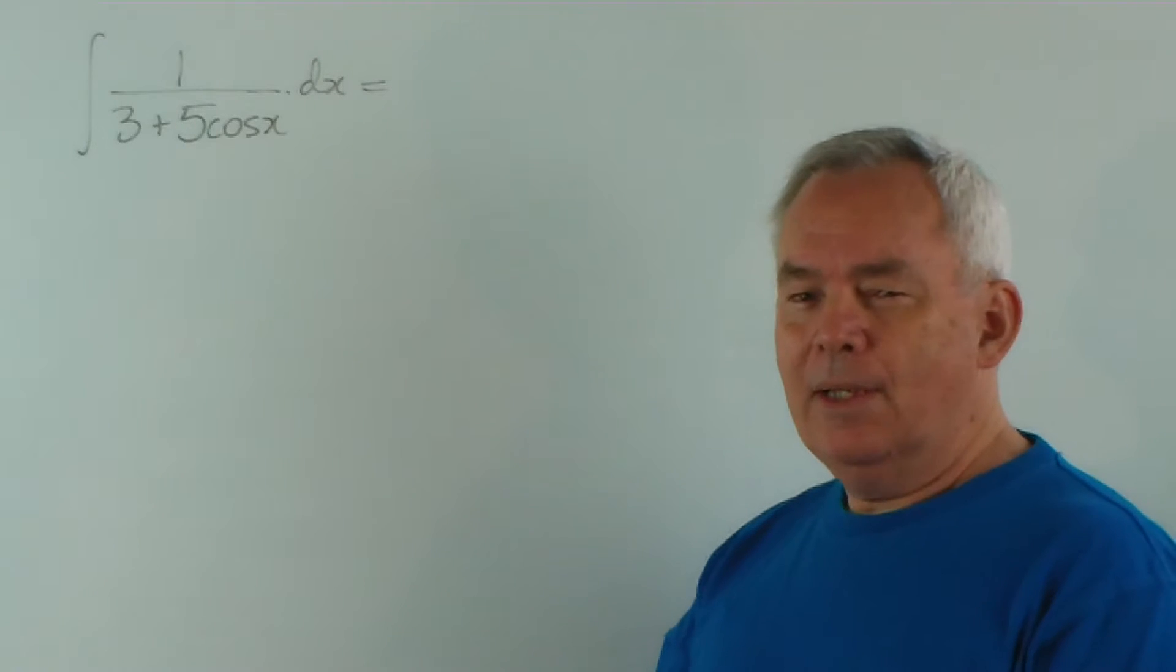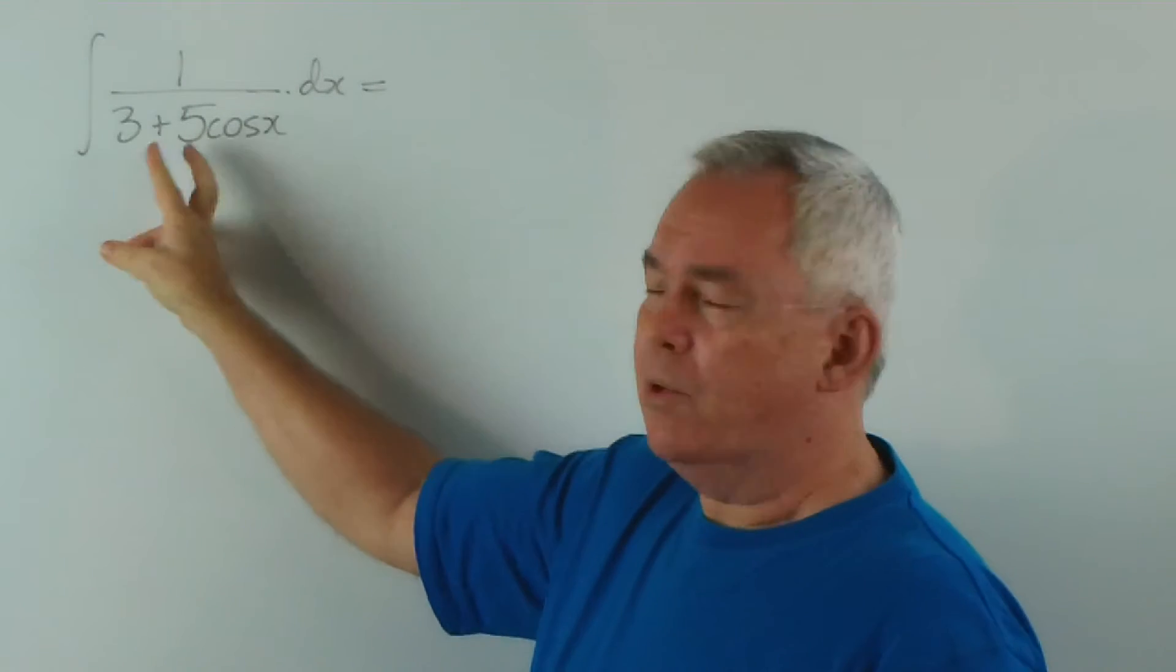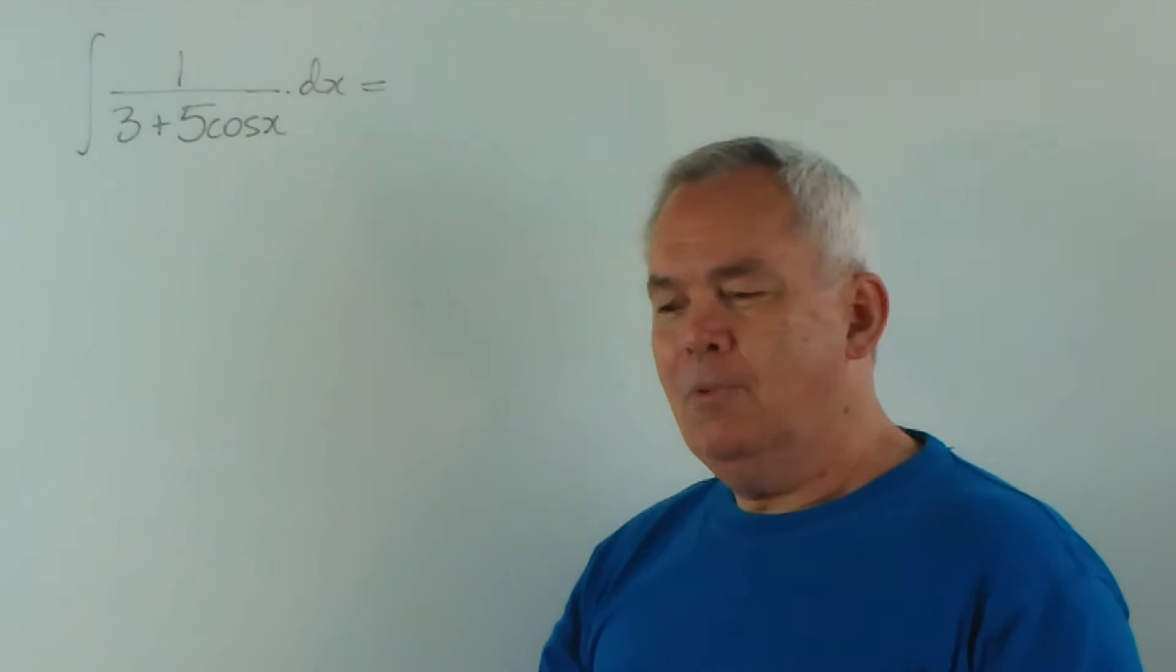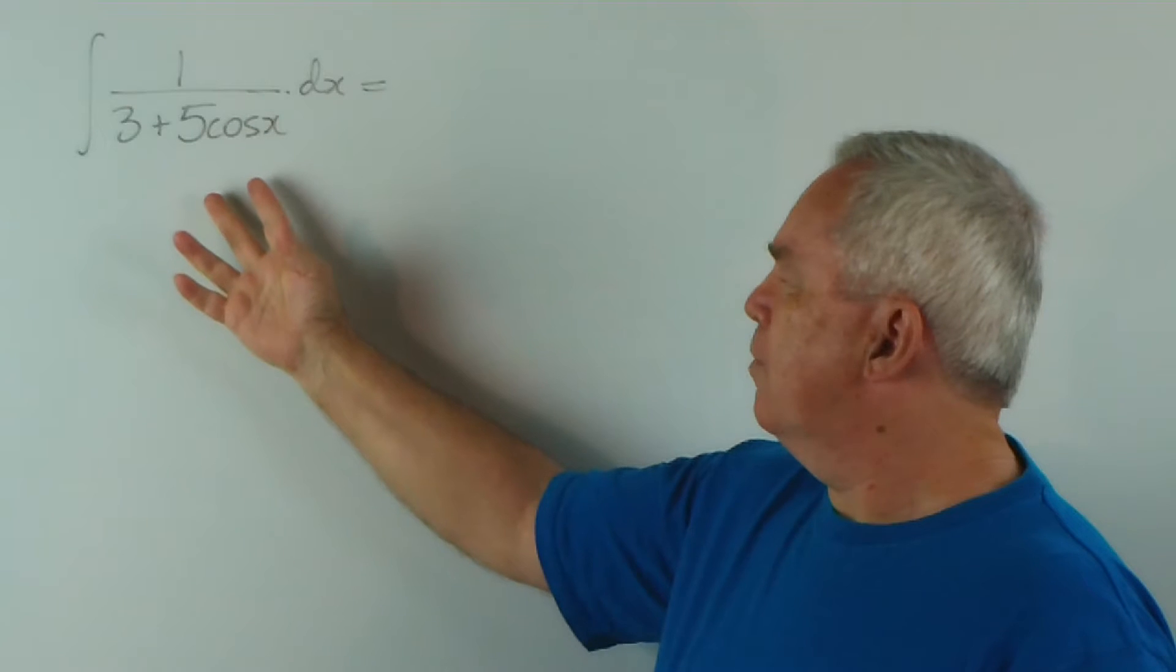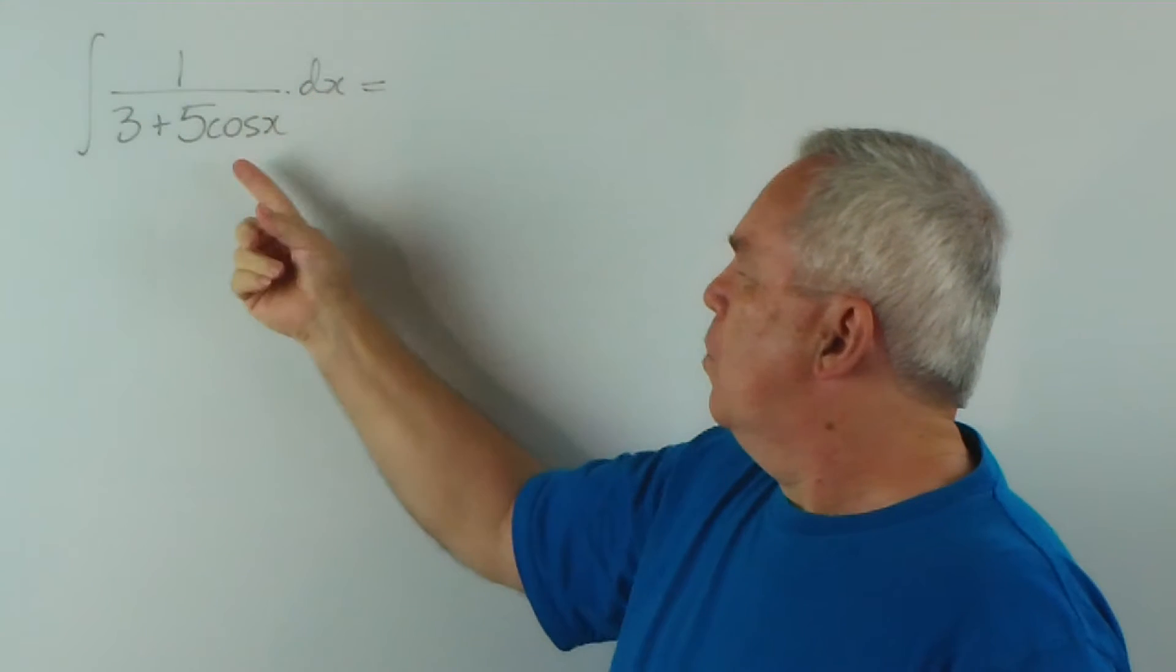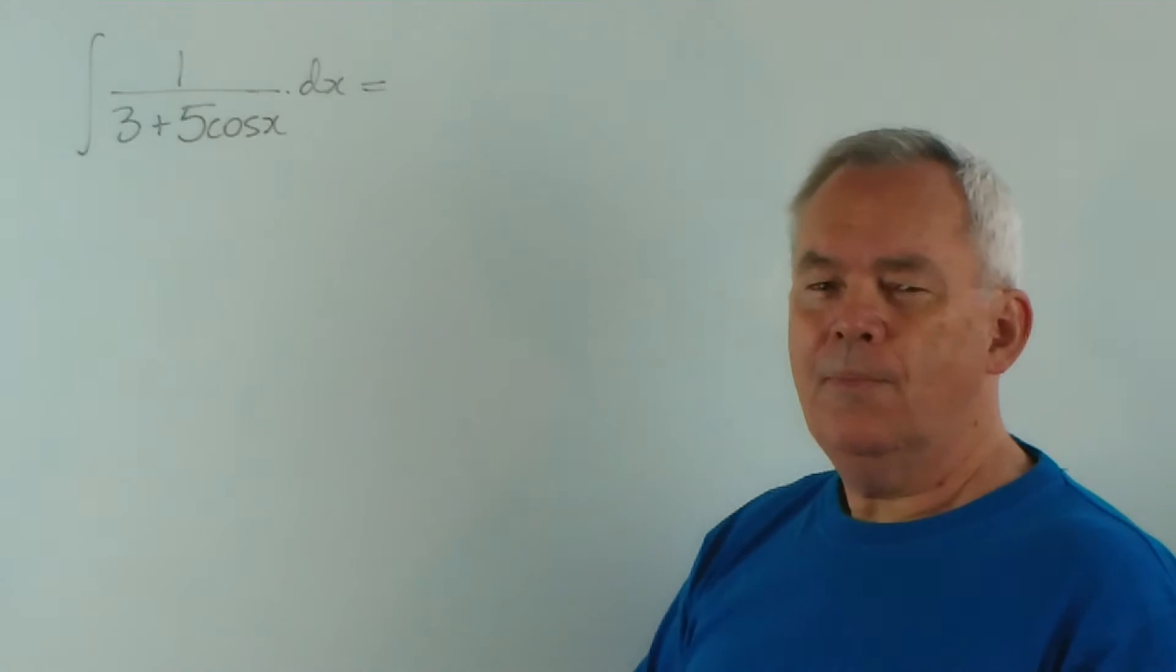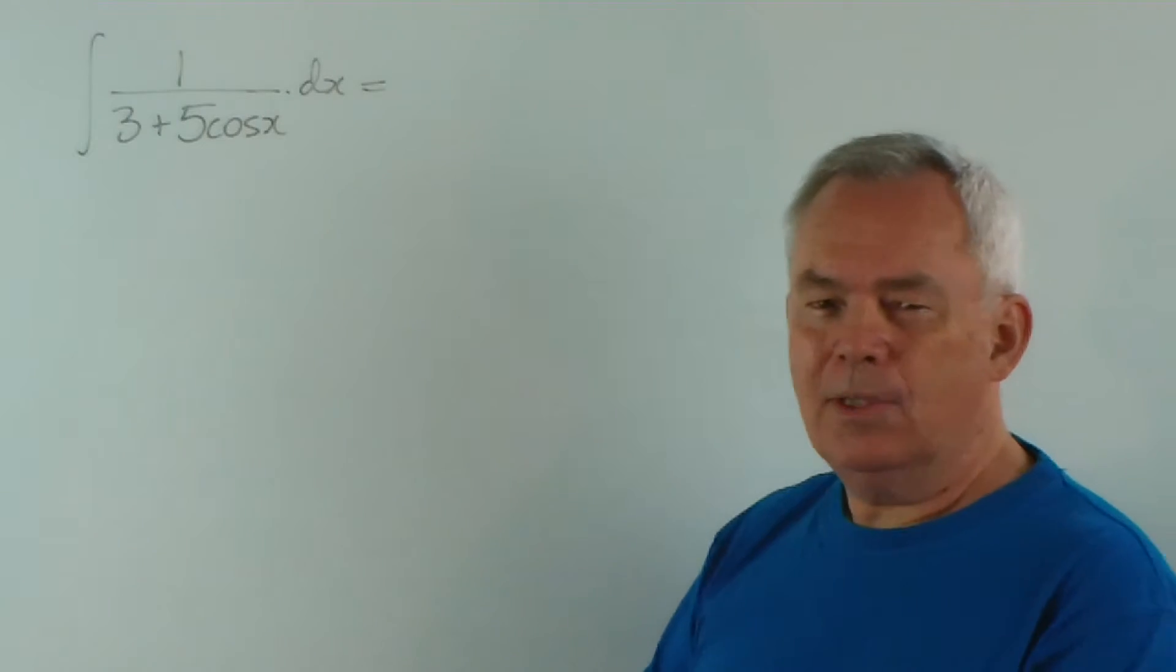The previous one, number 29, looked identical except the 3 and the 5 were reversed. We'll see that this makes a rather interesting difference to how we evaluate the integral. Being a simple fraction with a single trig function involved, we usually solve this by substituting using t-notation or half-angle notation.